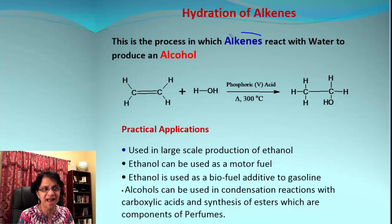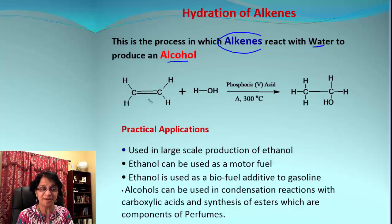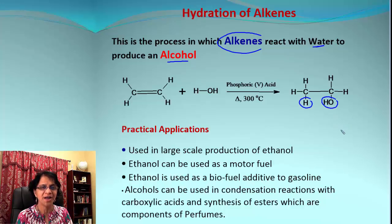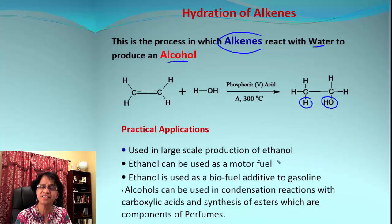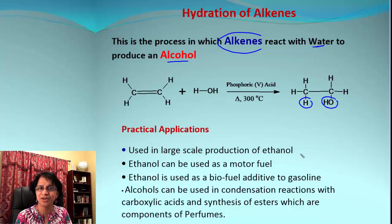The next one is hydration of alkenes — alkenes reacting with water to form alcohol, as shown in the figure. We begin with an alkene: one carbon gets the hydrogen and the second one gets the hydroxyl group, giving us the alcohol. This process is very important and can be used for large-scale production of ethanol, which can in turn be used as a source for producing many other organic compounds.